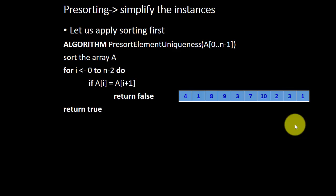So, let's look at the algorithm. If we apply a sorting first, that is what we call as pre-sort, we sort it first. So algorithm pre-sort. First, we sort the array.